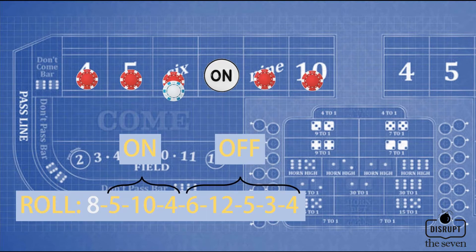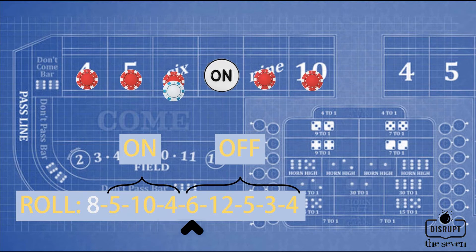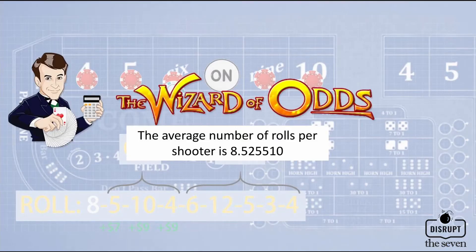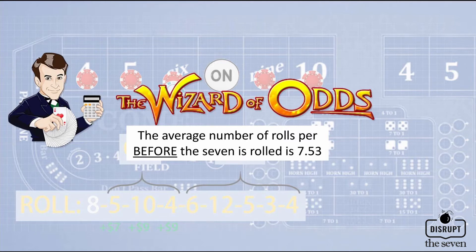For example: come out roll is a hard 8. We bet $26 across. Then the shooter rolls a 5, then a 10, and on the third roll a 4. We tell the dealer bets are off. The shooter continues rolling a 6, 12, 5, 3, and then a 4 on his 8th roll. According to the Wizard of Odds — I'll link the address in the description — the average number of rolls per shooter is 8.5. The last roll is always a 7-out, but the average roll before the 7-out is about 7.53. When we round up, that's a solid 8. So on average we have about 8 rolls before a shooter sevens out.